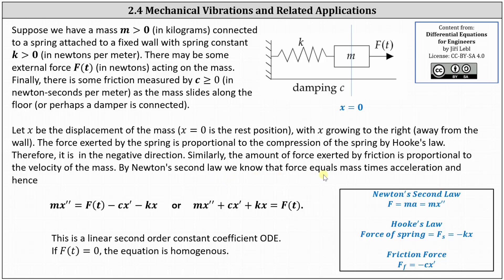By Newton's second law, we know that force equals mass times acceleration, meaning the force of the mass is equal to m times x double prime, where x double prime is the acceleration. Therefore, we can model the motion of the mass using the differential equation mx'' = F(t) - cx' - kx. If we set the right side equal to F(t), we have mx'' + cx' + kx = F(t), which is a linear second order constant coefficient ordinary differential equation. And if F(t) is a zero function, the equation is homogeneous.